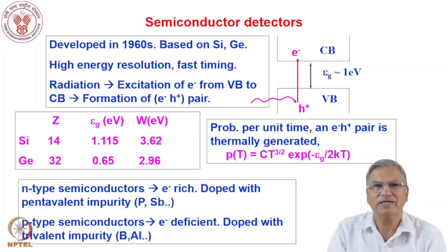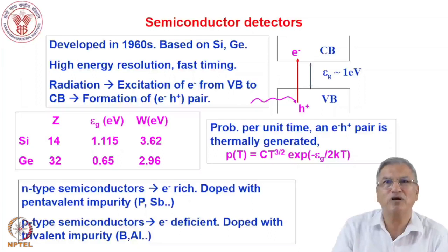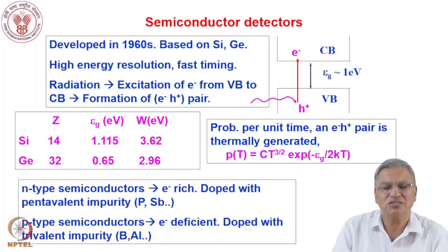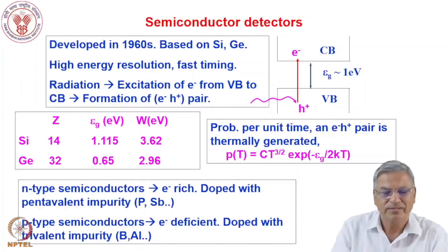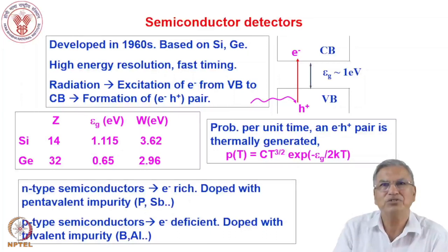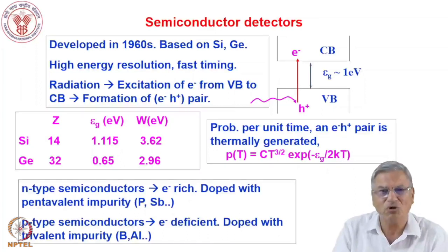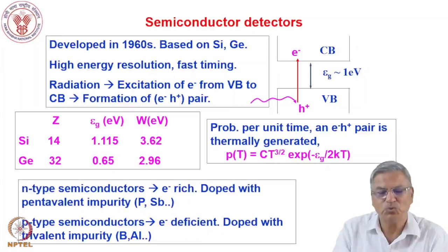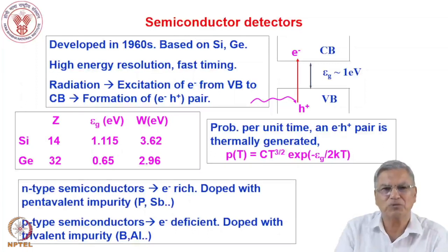Semiconductors are materials with a band gap range of around a few electron volts — they are between metals and insulators. These detectors were developed in the 1960s and are mainly based on silicon and germanium. They have excellent energy resolution and fast timing, though the detection efficiency for gamma rays is not that high because of the low atomic number of these materials — silicon is 14, germanium is 32. Overall, they are among the best detectors for gamma ray spectroscopy.